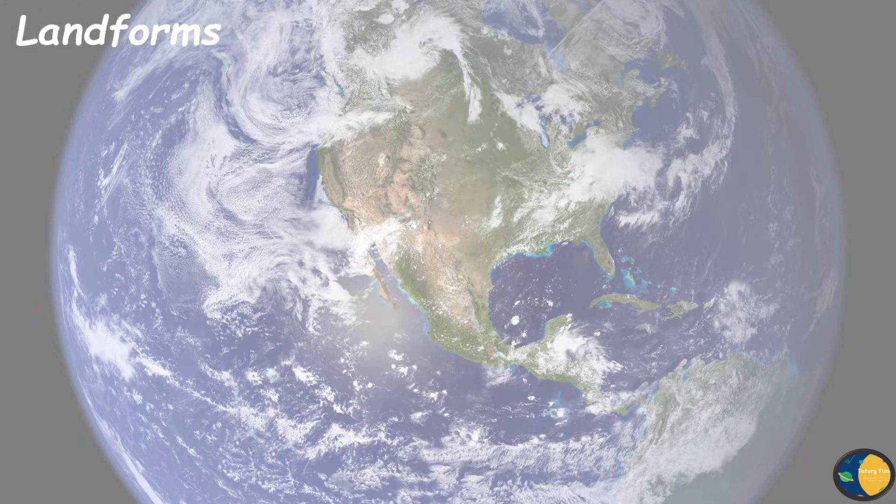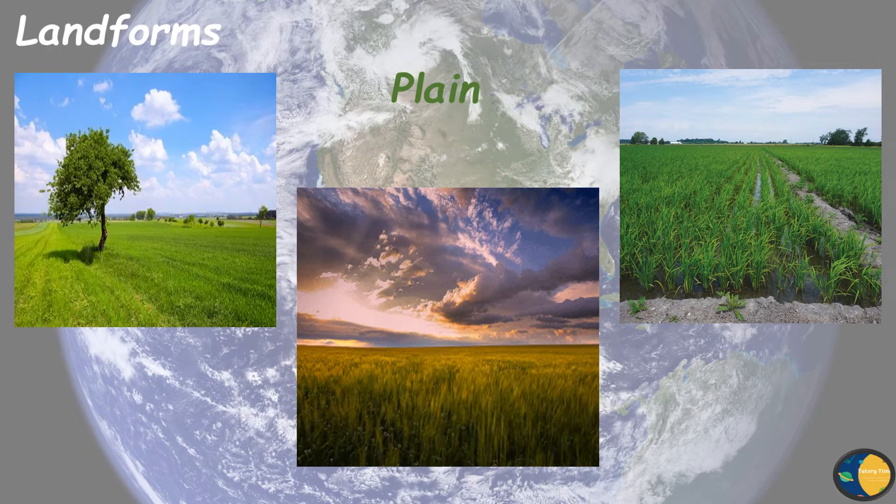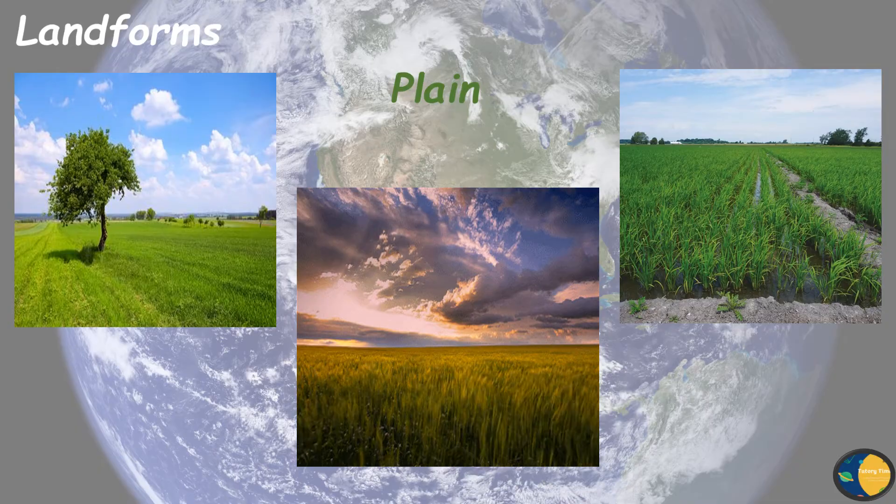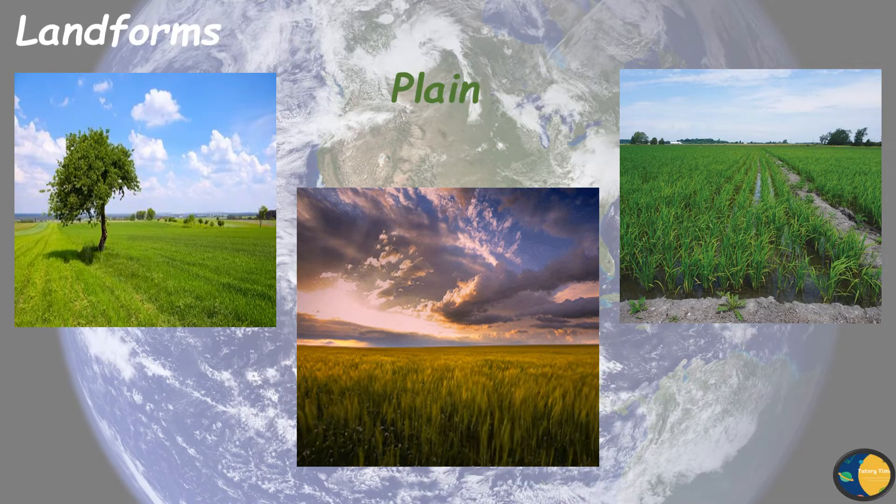There are many types of land on the Earth. Number one is plain. A plain is a level and flat land. It is easy to grow crops on plains. The land of a plain is very fertile. Most cities of our country are in the plains.